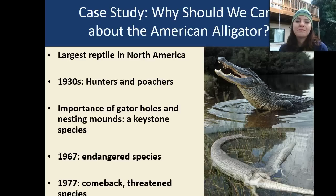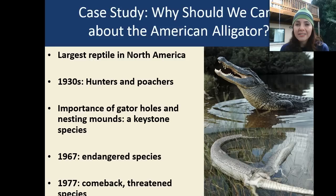Another keystone species is the American alligator — the largest reptile in North America. In the 1930s, hunters and poachers wiped out a large number of them. Their gator holes and nesting mounds make them a keystone species. In 1967, they were classified as an endangered species, but by 1977 they were making a comeback and were downgraded to a threatened species.